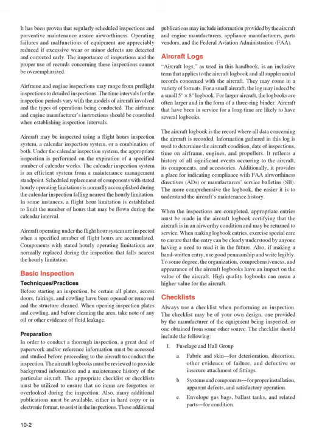Always use a checklist when performing an inspection. The checklist may be of your own design, one provided by the manufacturer, or obtained from another source. The checklist should include: 1. Fuselage and hull group — (A) Fabric and skin, for deterioration, distortion, other evidence of failure, and defective or insecure attachment of fittings; (B) Systems and components, for proper installation, apparent defects, and satisfactory operation; (C) Envelope gas bags, ballast tanks, and related parts, for condition.